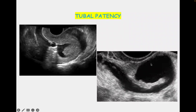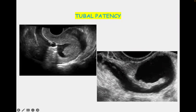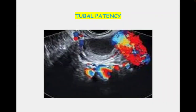The fallopian tubes can be seen floating in the pouch of Douglas. Normally fallopian tubes cannot be seen on ultrasound, but when there is fluid collection — similar to what you might see during ovulation — the tubes become apparent with their fimbrial ends visible. When fluid has come into the pouch of Douglas, the tubes can be seen floating. There is also a floral sign.